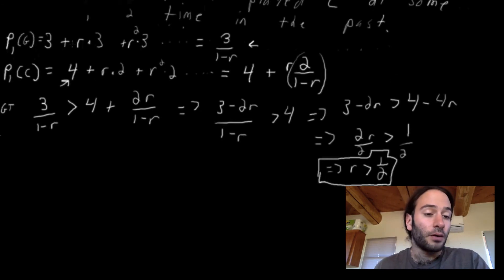So if player two is playing grim trigger and r is greater than one half, player one would also be willing to play grim trigger. We can show, there's a little bit more details here because we have to do the exact same thing for player two, but both players would be willing to play grim trigger if both players' discount rate is greater than one half.